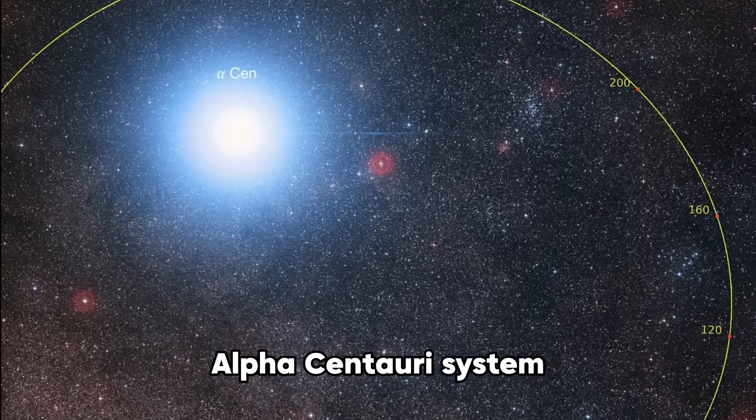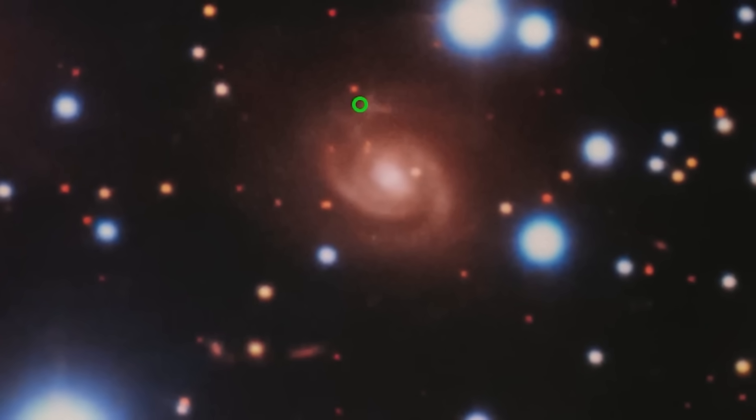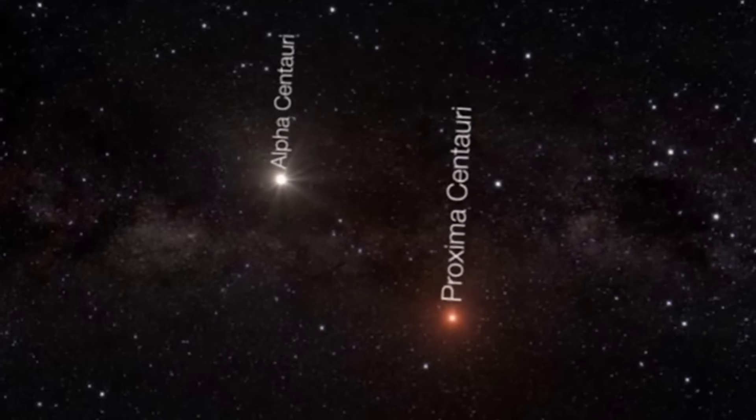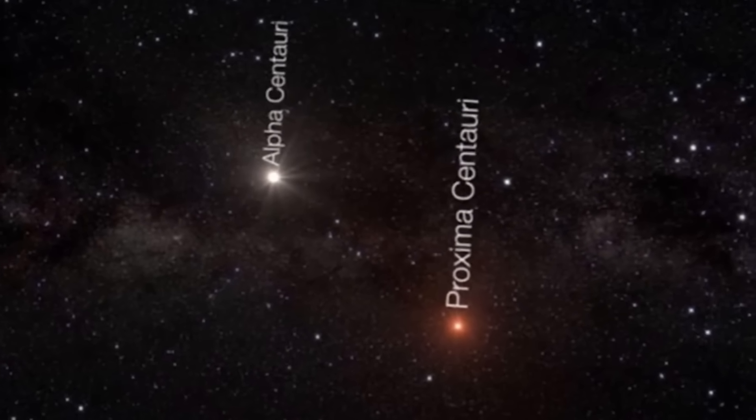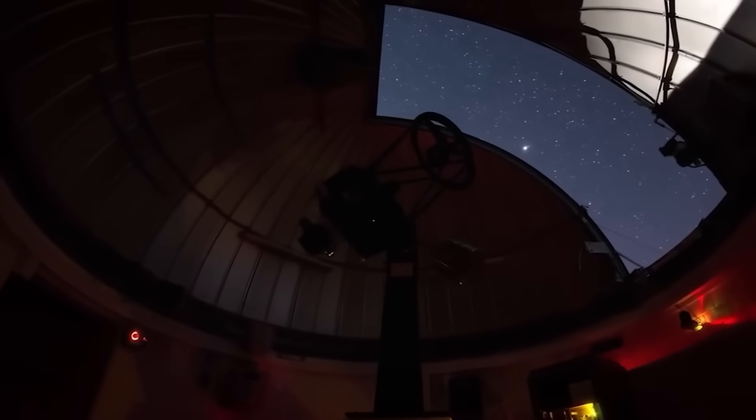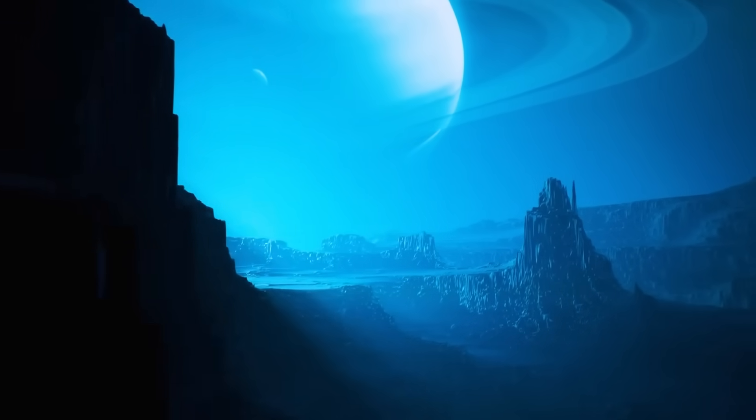We can view the Alpha Centauri system as it was four years ago when we look at it from our vantage point, which is around four light years away. The astronomical finding of Proxima b is quite intriguing. It is one of the most Earth-like exoplanets ever found, situated within 25 light years from our star. Be not deceived by the distance.